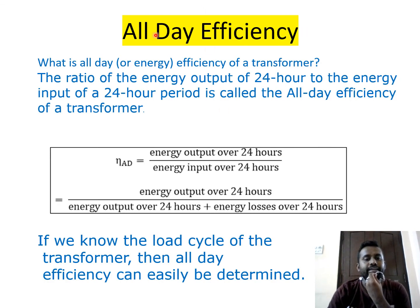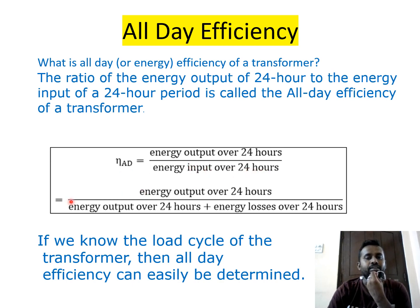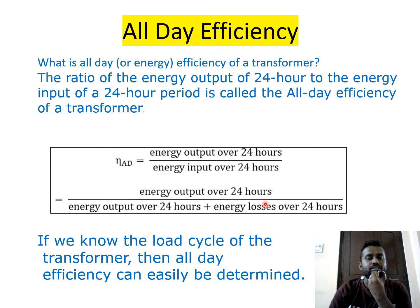All-day efficiency is the ratio of energy output over 24 hours to energy input over 24 hours: η_all-day = Energy output (24 h) / Energy input (24 h) = Energy output (24 h) / [Energy output (24 h) + Energy losses (24 h)]. If the load profile of the transformer is known, all-day efficiency can be easily determined.